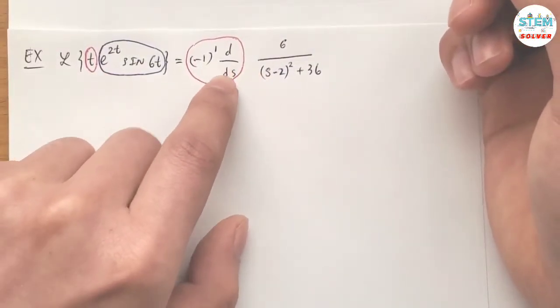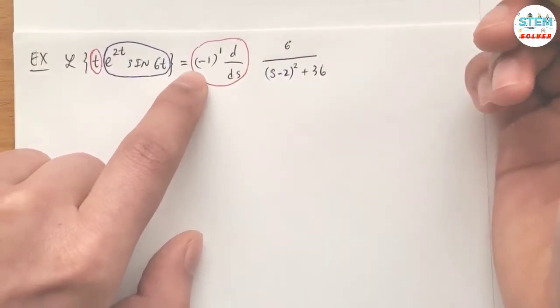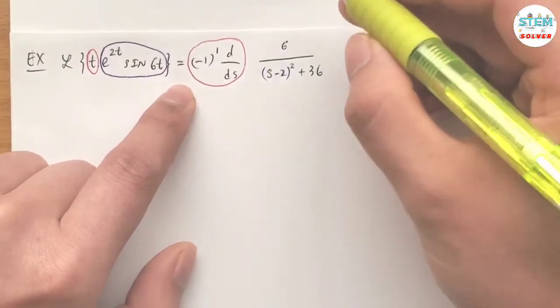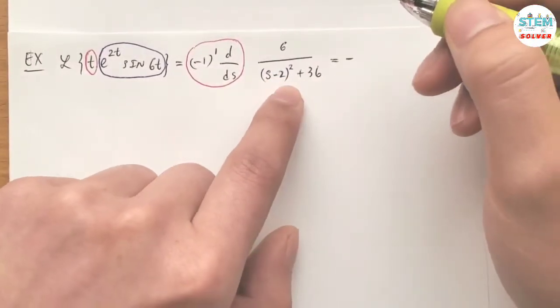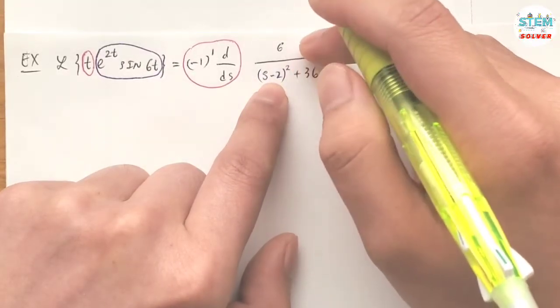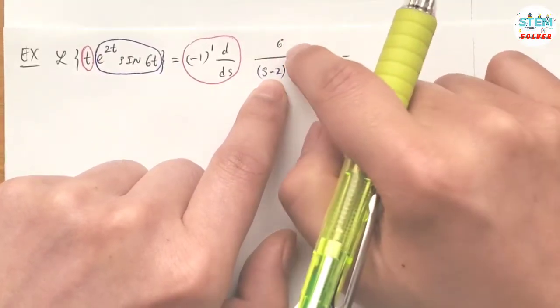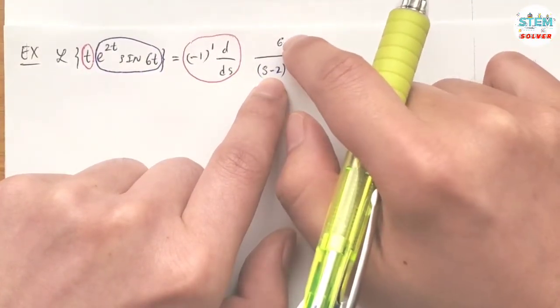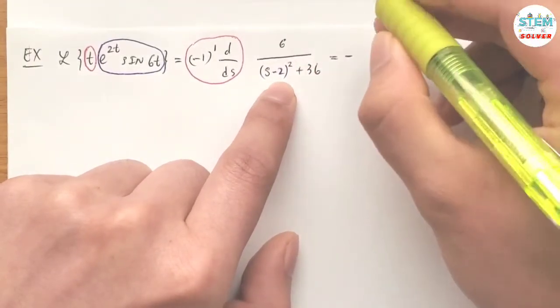Now we are going to take the derivative of this. So negative 1 to the first would give us negative 1, the derivative of this, so bottom times derivative on top, which would give us 0 because the derivative of a constant number is just 0.